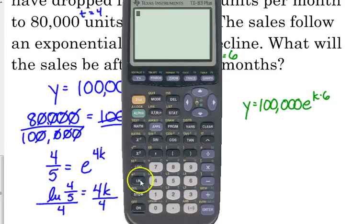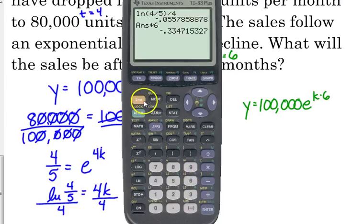So, the natural log of 4 over 5 divided by 4 times 6. Notice that's a negative number, that natural log of 4 over 5 divided by 4. We said when K was less than 0, it was decay or decline.